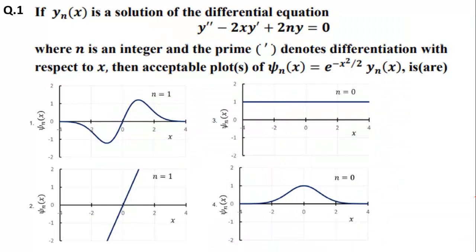Here we go with question number one, which is saying if y_n(x) is a solution of the differential equation y'' - 2xy' + 2ny = 0, where n is an integer and the prime denotes differentiation with respect to x, then acceptable plots of ψ_n(x) = e^(-x²/2) y_n(x) is or are. This is a multiple select choice question, so here we have four graphs.